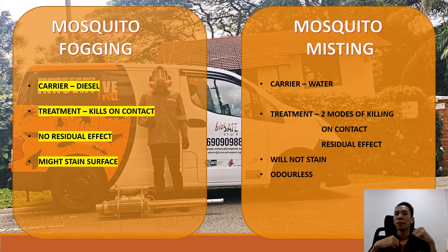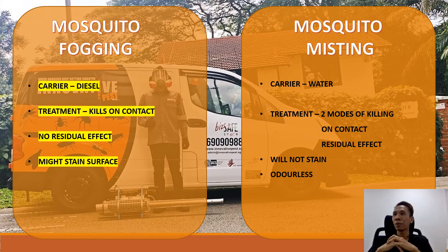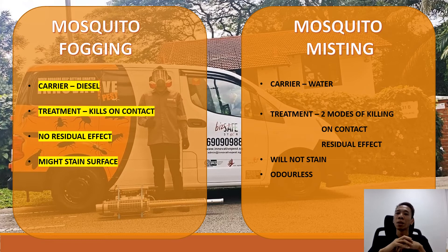For fogging, it only kills on contact. For mosquito misting, it has a dual effect — killing on contact and residual effect. For mosquito fogging, you may notice a thin film on surfaces like glass or walls because the carrier is diesel. For mosquito misting, which is mainly water, you don't have this effect and it's also close to odorless.